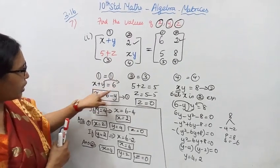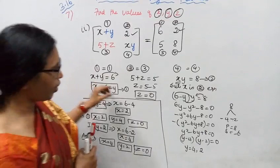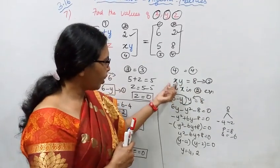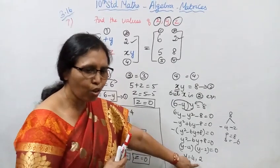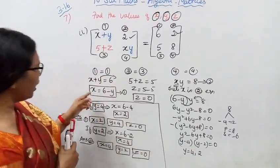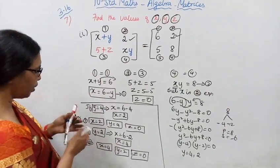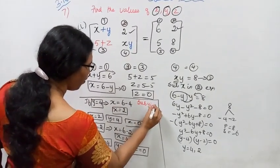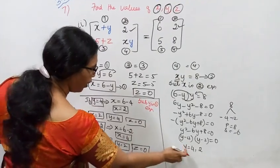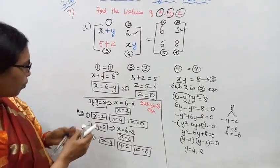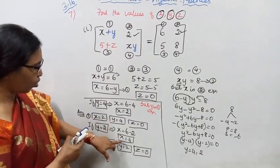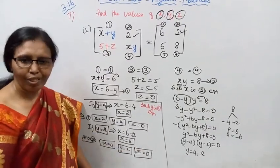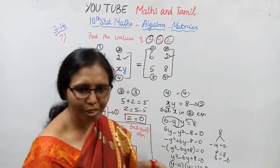To verify, substitute x values into x plus y equal to 6, and then substitute into the second equation to confirm. Our two solution sets are: x equal to 2, y equal to 4, z equal to zero, and x equal to 4, y equal to 2, z equal to zero. Both answers are correct.